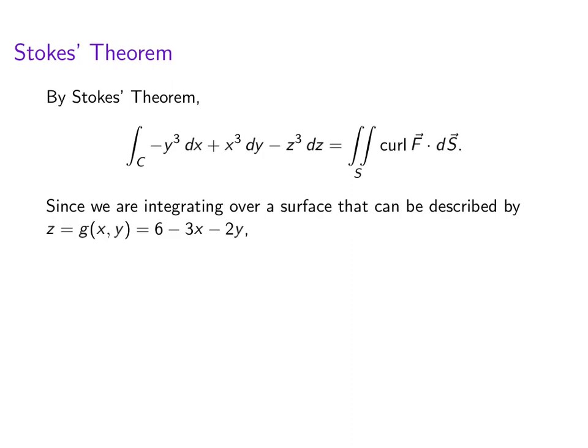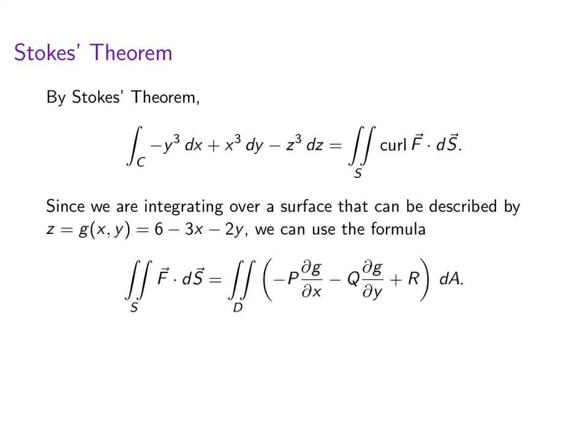Now remember that we're integrating over a surface that can be described by z equals g of xy. In particular, it's z equals 6 minus 3x minus 2y. So we can use this formula that says that the surface integral of F dot dS is equal to the double integral over the parameter region D of negative P dg dx minus Q dg dy plus R dA.